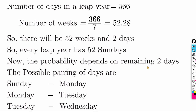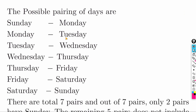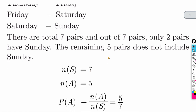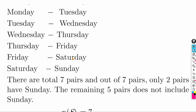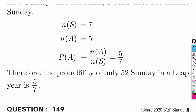The probability depends on the remaining 2 days. The possible pairs for those 2 days are: Sunday-Monday, Monday-Tuesday, Tuesday-Wednesday, Wednesday-Thursday, Thursday-Friday, Friday-Saturday, Saturday-Sunday — total 7 pairs. Out of 7 pairs, only 2 pairs contain a Sunday. The remaining 5 pairs do not include Sunday. So to get only 52 Sundays (no 53rd), the answer is 5 by 7.